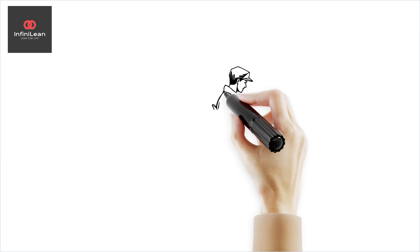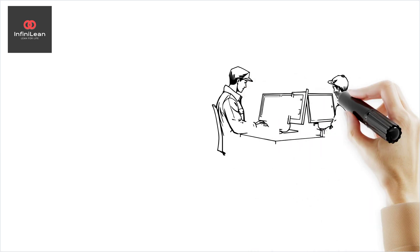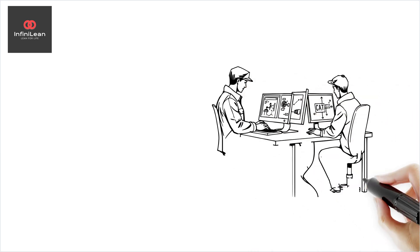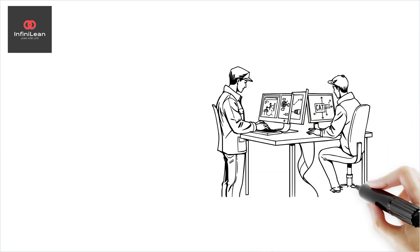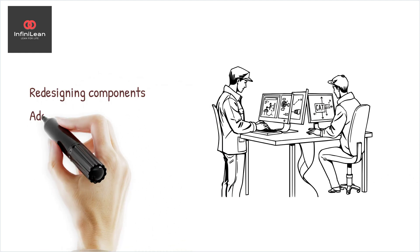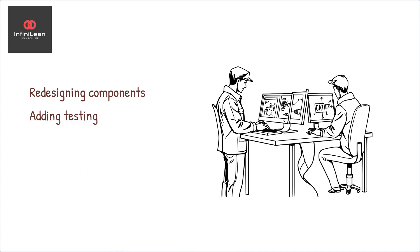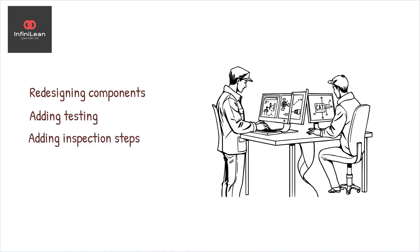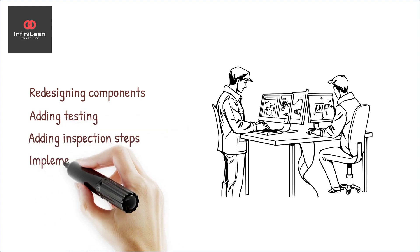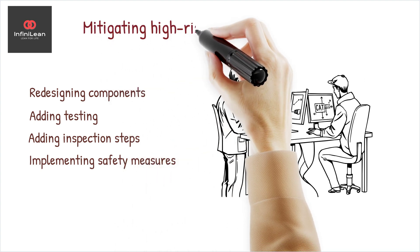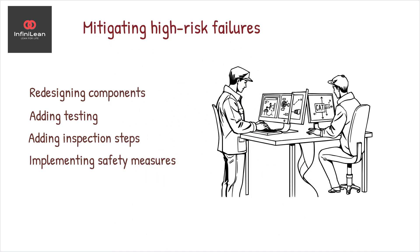It is crucial to reduce high RPN scores. This can involve redesigning components, adding testing or inspection steps, or implementing safety measures. Essentially, DFMEA helps teams make informed decisions to mitigate risks, enhancing the reliability and safety of the final product.